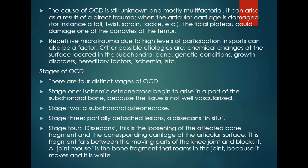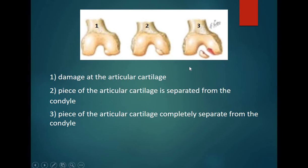Stage 4 involves the loosening of the affected bone fragment and the corresponding articular cartilage. This fragment falls between the moving parts of the joint and blocks it — sometimes called the 'joint mouse,' referring to the bone fragment that roams freely in the joint. In the images shown, you can see degeneration and osteonecrosis beginning, then a crack forming, and in the third picture the fragment is completely separated from the condyle.